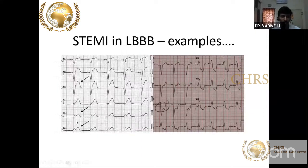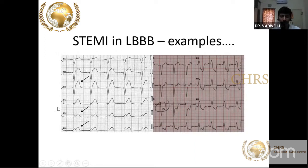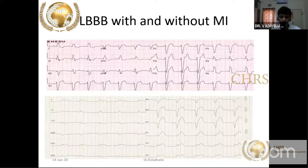Another soft sign: normally in V5 and V6, QRS is upright. In a patient with non-ischemic LBBB, T wave inversion should be present. But if the T waves are upright in V5 and V6 in a patient with LBBB, that suggests ischemia and you should be very careful.